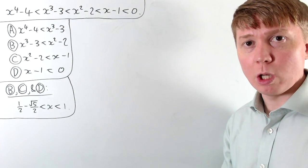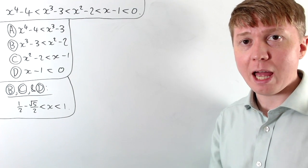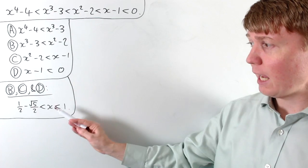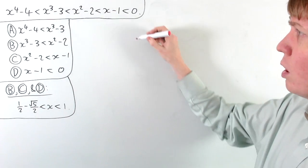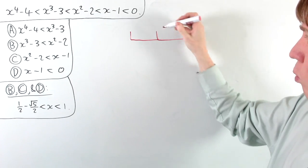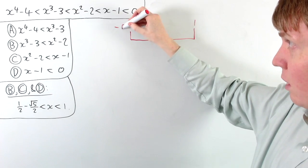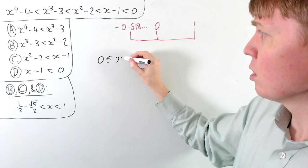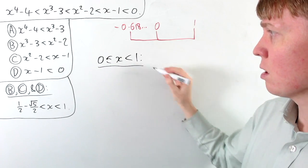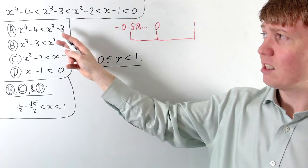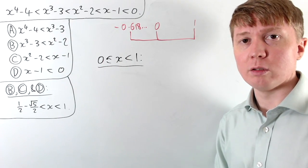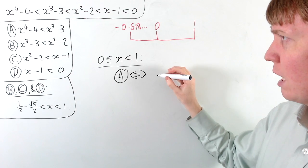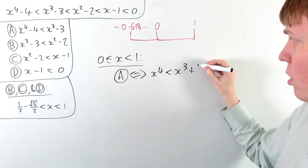Now we consider inequality A. It makes sense to handle positive and negative x separately. Currently x is between one half minus root 5 over 2 (approximately negative 0.618) and 1. For the case where x is between 0 and 1, inequality A is equivalent to asking whether x to the 4 is strictly less than x cubed plus 1.